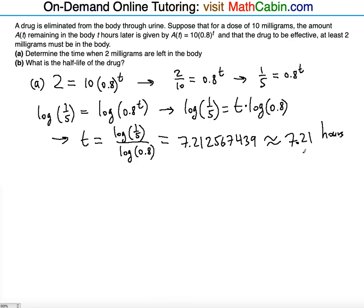So in about seven hours, there will be the least number of milligrams for the drug to still be effective. That's the least value that it can have. So in seven hours, basically the drug will start to be ineffective.